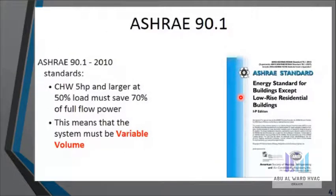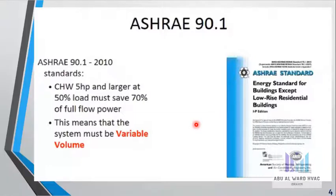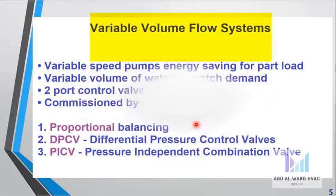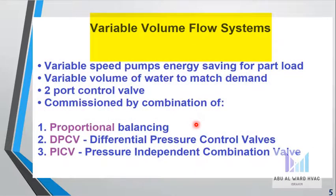According to ASHRAE 90.1, chilled water systems 5 horsepower and larger at 50% load must save 70% of full flow power. Variable volume flow systems use variable speed pumps for energy saving at part load.